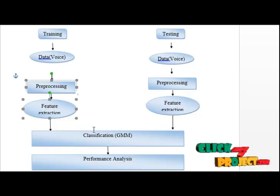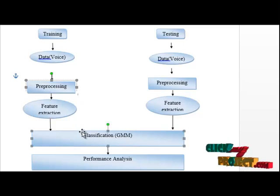The next step is the classification step. In the classification, we use GMM. It is a parametric probability density function represented as a weighted sum of Gaussian component densities. GMMs are commonly used as a parametric model.